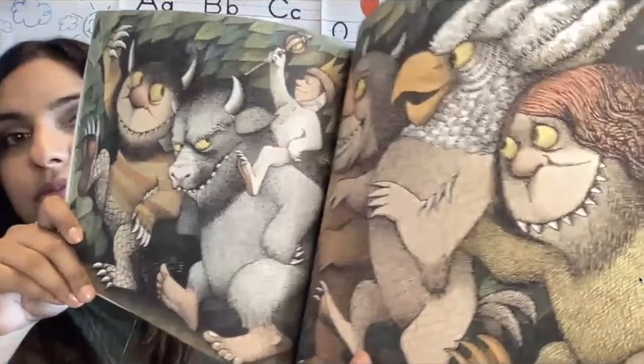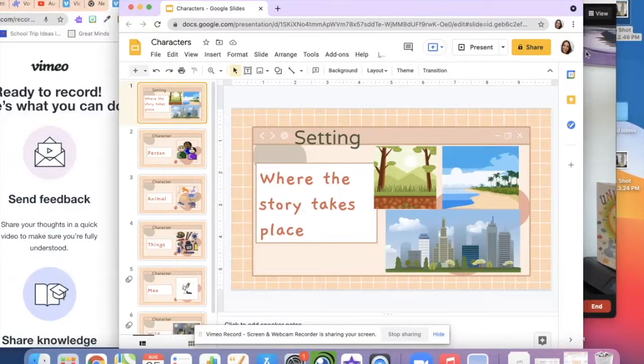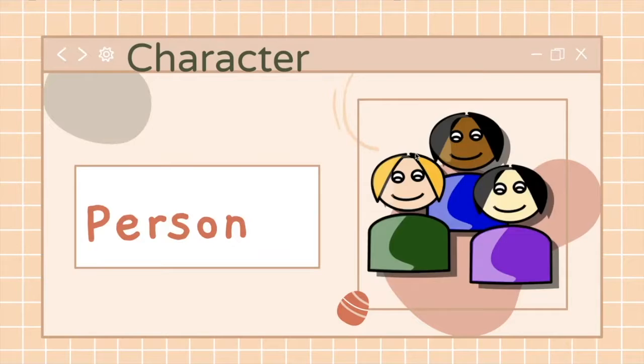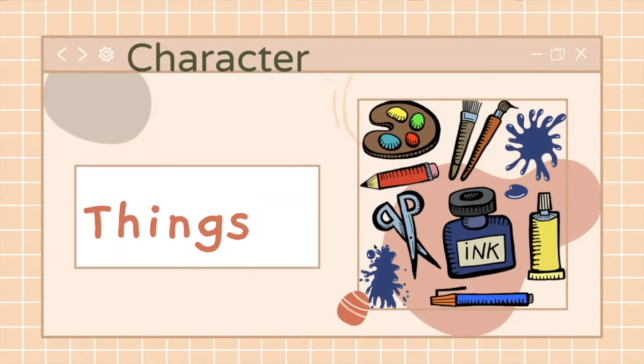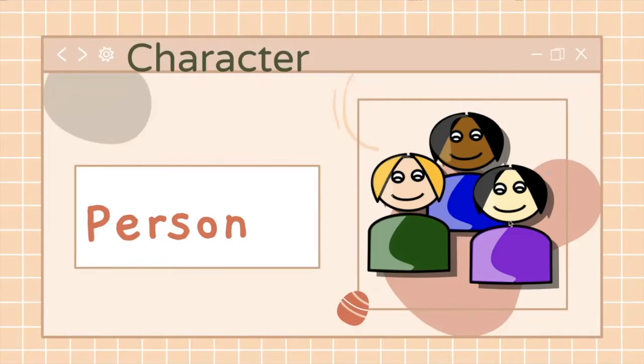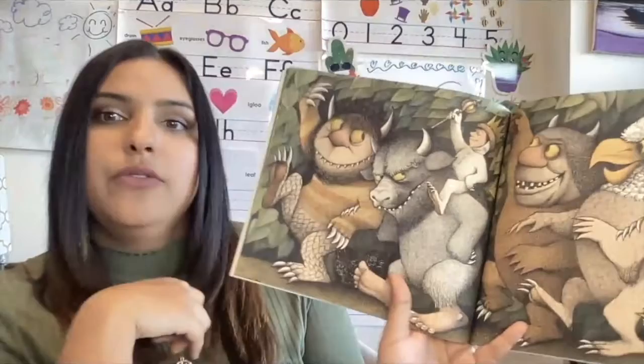Do my friends remember what characters are? Let me help you out. Characters can be a person, it can be an animal, or it could be a thing. So anything talking in the story — if it was a talking pencil, it would be a character. If it was a talking lion, it'd be a character. And if it's a person, it's a character. So who are the characters in our story so far?